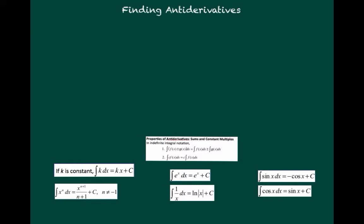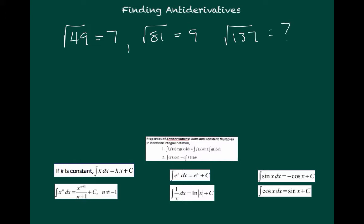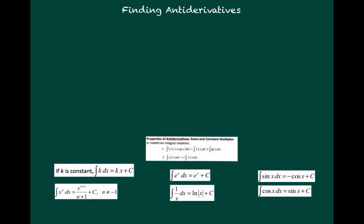Finding antiderivatives is a little bit like some other mathematical processes, like finding a square root. If I asked you for the square root of 49, you'd have no trouble telling me that was 7, or the square root of 81 would equal 9. But if I asked you a number whose square root you didn't have memorized — say the square root of 137 — it does have a square root, but we don't have it memorized, so we'd need a calculator or some other method. It's really the same way with antiderivatives. For the most part, we're stuck with antiderivatives that we know. There are some techniques like substitution and integration by parts, which we'll learn, but for now we're going to focus on the elementary antiderivatives.